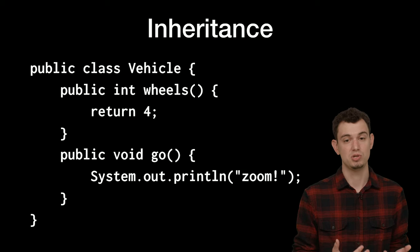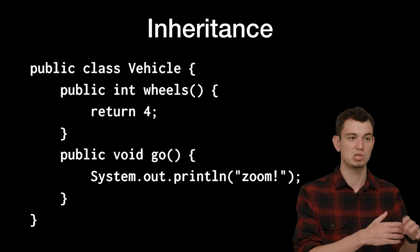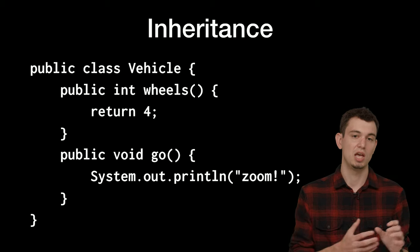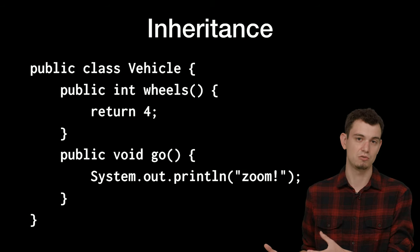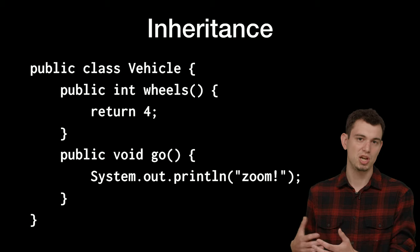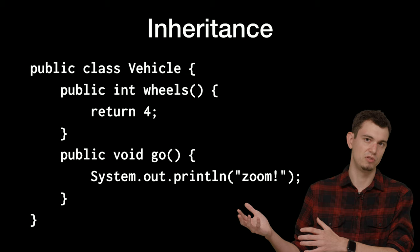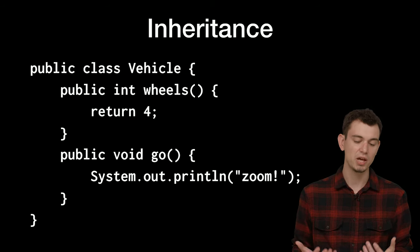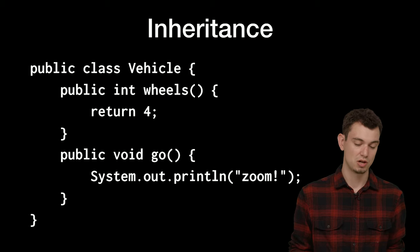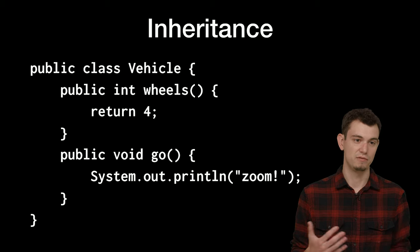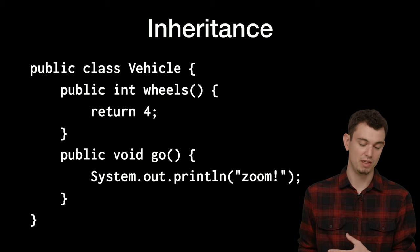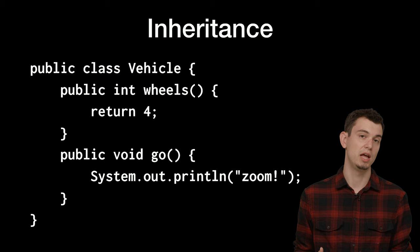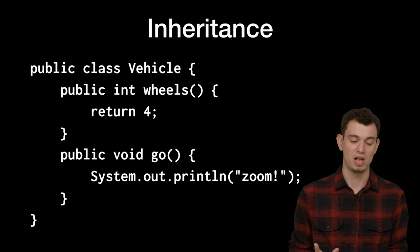One of the more powerful features of classes is inheritance. Inheritance allows you to say: I have some base or parent class that defines some fields and methods, and I want to take that class and modify it a little bit. For example, here we have a class called Vehicle with two methods: wheels(), which returns 4 (every vehicle has four wheels), and go(), which just prints something. We can instantiate that class or call these methods in the same way.